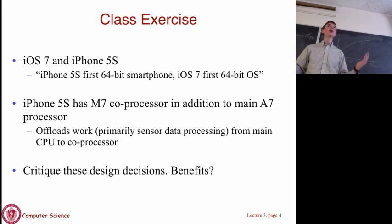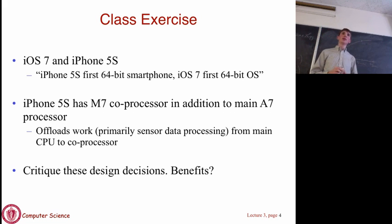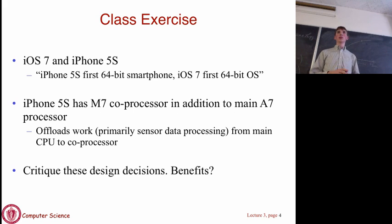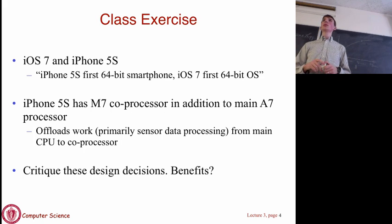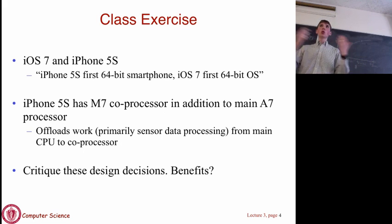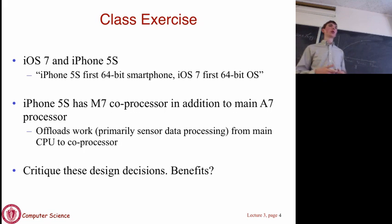Let's talk about the other big feature of the iPhone 5S: the M7 coprocessor. It has a main processor that does most of the work, but this coprocessor offloads work primarily from sensors like the camera and accelerometer. A major benefit is battery life, because the coprocessor is smaller and more specialized, using less power than the main CPU. An alternative design decision would be to make the main processor more powerful, but that might increase memory usage and hurt battery life.